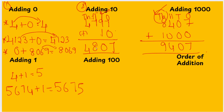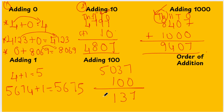Adding 100: what if we add 5,037 plus 100? The answer is 5,137 — which place changes? The 100s place changes. Only the 100th place changes. In adding 1,000, the 1,000s place changes. In adding 10, you change only the 10s place. In adding 100, you add only the 100th place. The remaining numbers you write as they are.